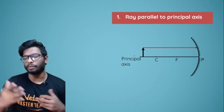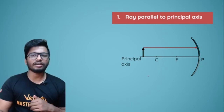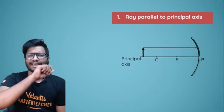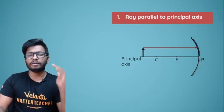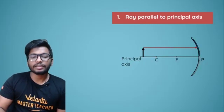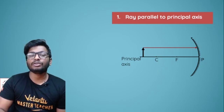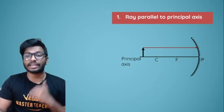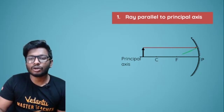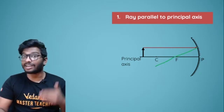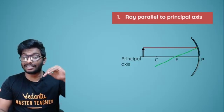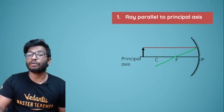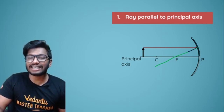For a concave mirror, there are three kinds of incident rays. The first ray of light is one that is parallel to the principal axis. If the ray of light is parallel to the principal axis, then after reflection it will pass through the focus — in every single scenario, it will always pass through the focus.